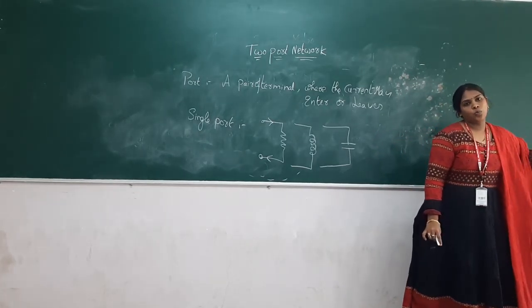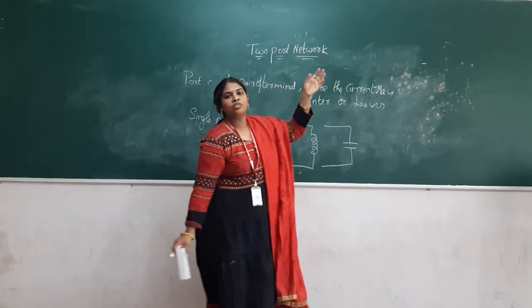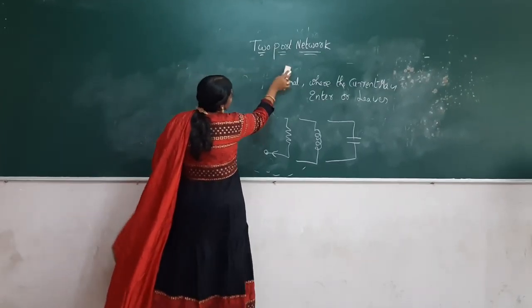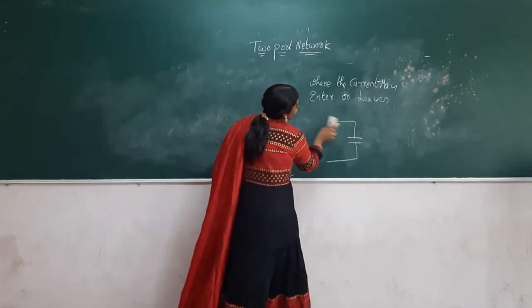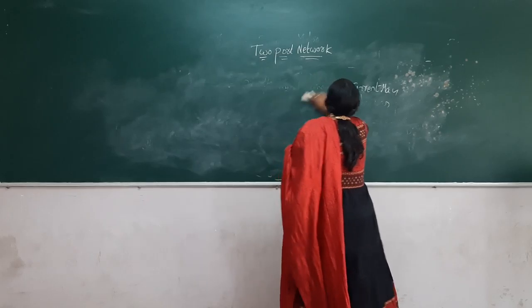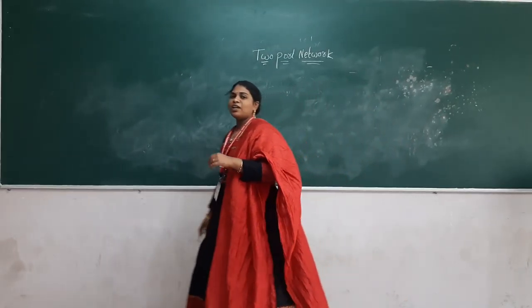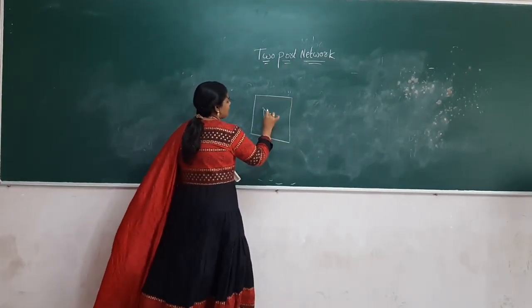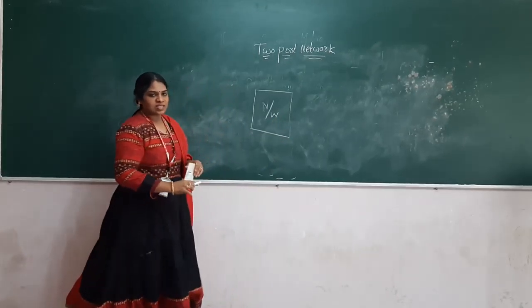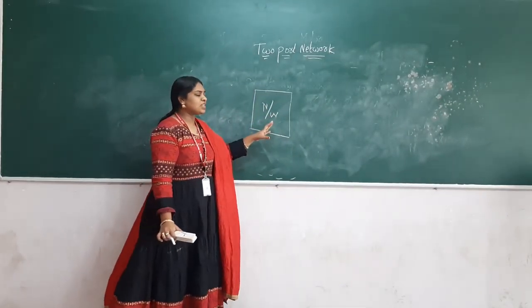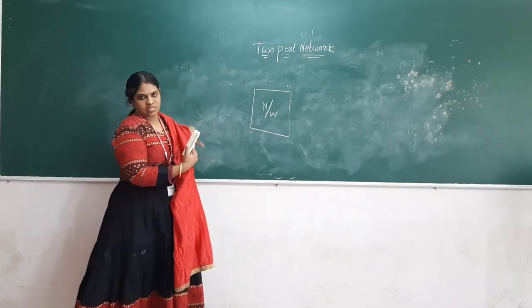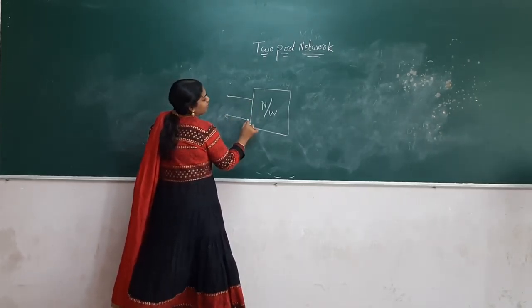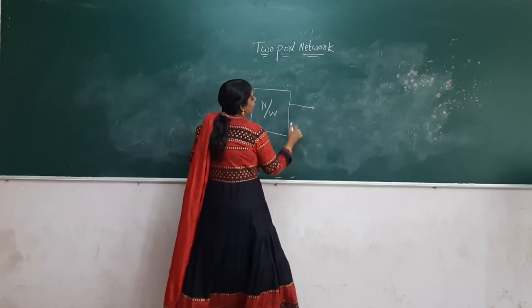Now if you see a two-port — according to the definition, a port means it is a pair of terminals where the current may enter or leave. We call that a port. Since we are saying two-port, the network consists of two pairs of terminals.